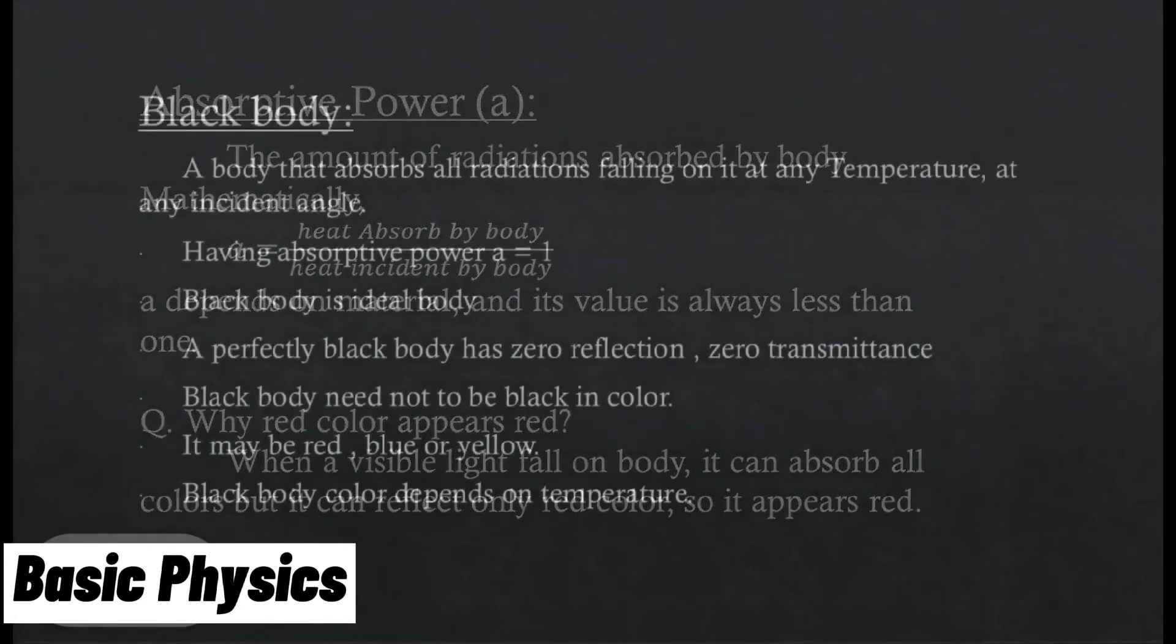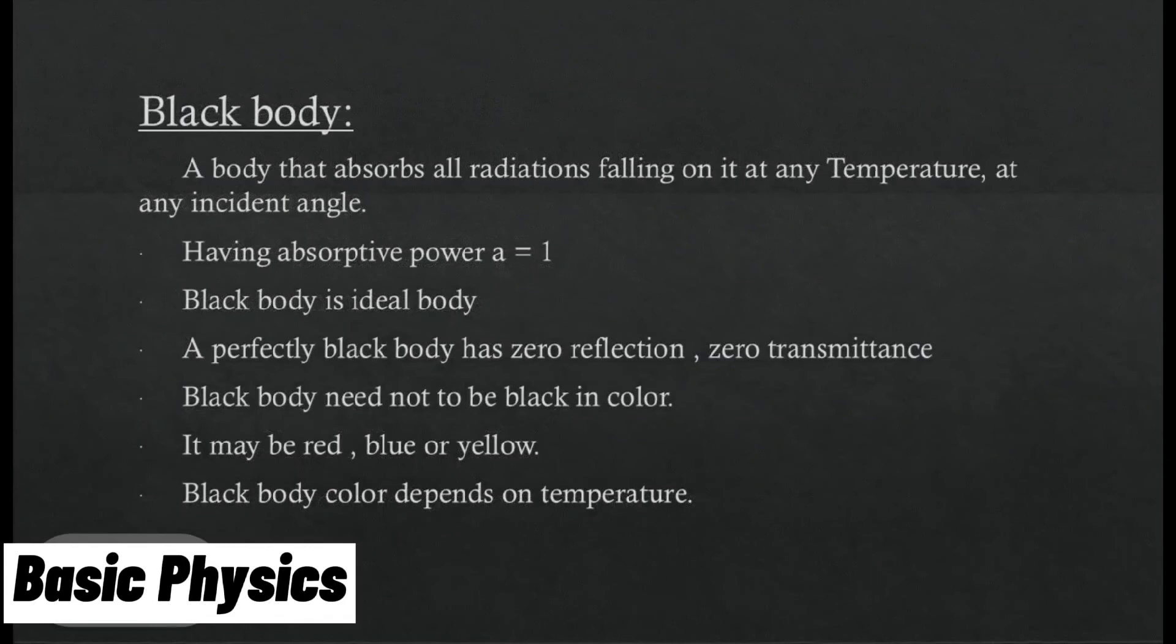Black body. A body that absorbs all radiations falling on it at any temperature, at any incident angle, having absorptive power a equals 1. Black body is an ideal body. A perfectly black body has zero reflection, zero transmittance. Black body need not be black in color. It may be red, blue or yellow. Black body color depends on temperature.